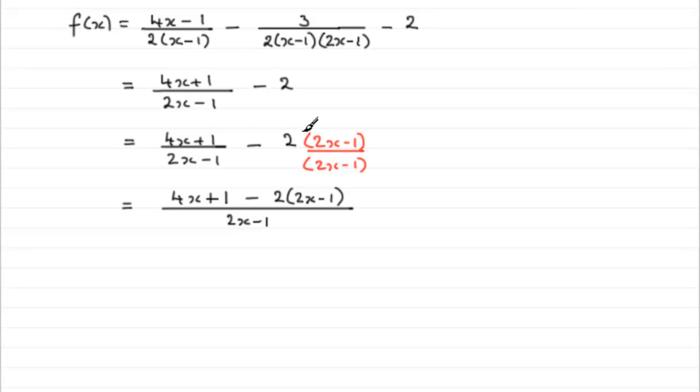Because if you don't put this over a common denominator, there's every chance that you might write 4x plus 1 minus 4x minus 2 when you expand this. And it isn't. You'll see that when we expand this, instead of it being minus 2, it's going to be plus 2.